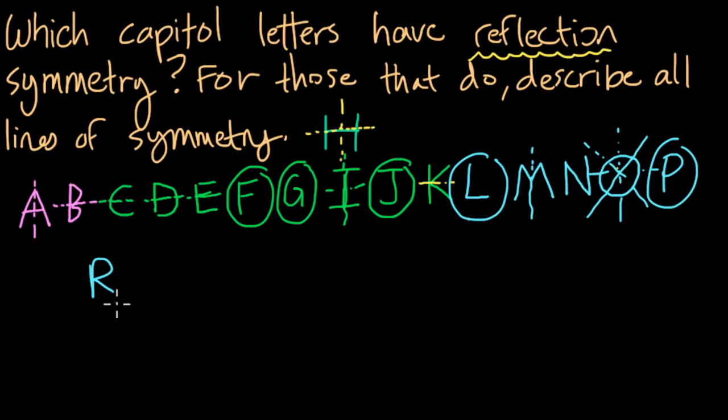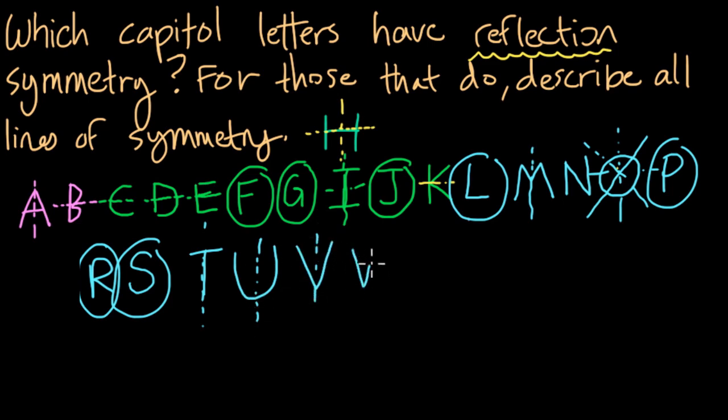R also has no lines of symmetry. How about S? Well, S looks like it might fold, but again, it has no lines of symmetry. The letter T does have symmetry, right? It has a vertical line. We could fold it in half there. The letter U also has a vertical symmetry. So does V. And W.